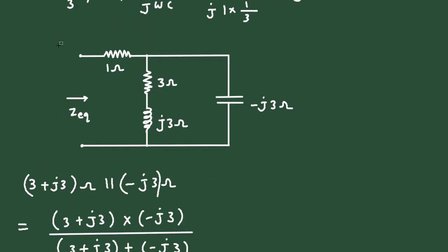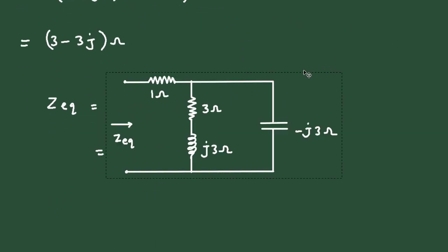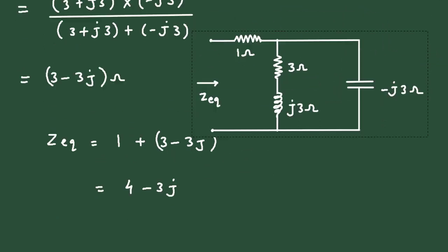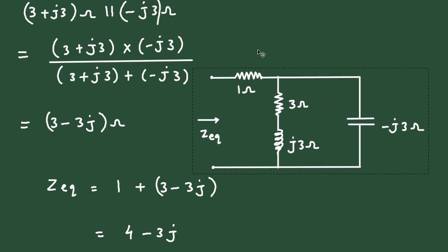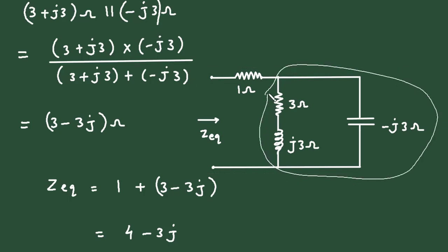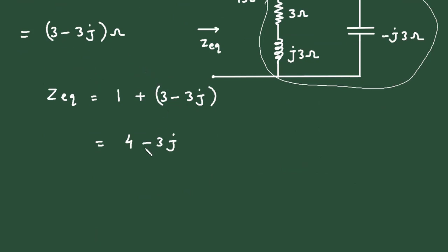To understand better, let's revisit the circuit. We already found the value for the parallel portion: it is 3 minus 3j ohm. And this is in series with the 1 ohm resistor, giving 1 plus 3 minus 3j, which equals 4 minus 3j ohm.